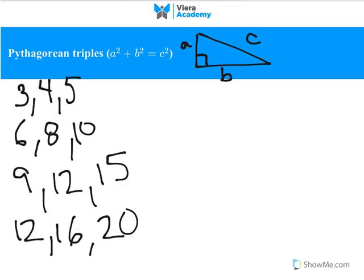And what they have in common is that they are all Pythagorean triples. Another Pythagorean triple that is very common in the SAT is 5, 12, and 13.